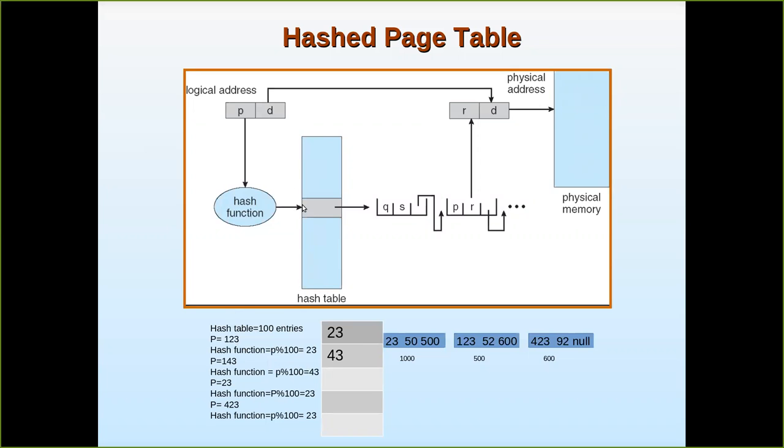For example, if the page number is 123, then you apply the hash function. This is nothing but the maximum index of the hash table for the division. The page number is in the numerator. So page number mod 100, where 100 is the maximum size of the hash table. That is 0 to 100, 100 entries we have taken. So P mod 100 will give you 23. 123 mod 100 will give you 23. Now what happens? Even if the page number is 123, it maps to the 23 index.